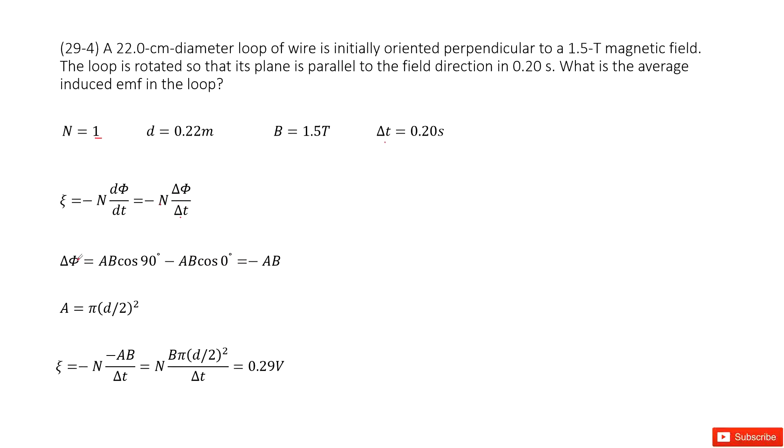So delta phi is the change of magnetic flux. So we use the final magnetic flux minus initial magnetic flux.